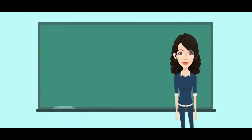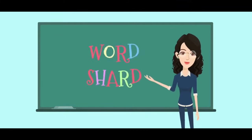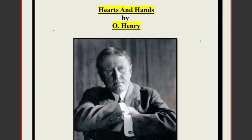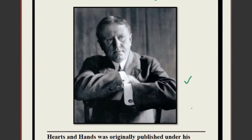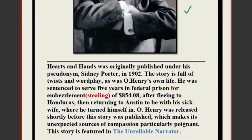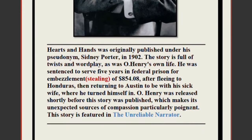Hello everybody, welcome to Word Shard. Today we are going to start with the chapter 'Hearts and Hands,' which is written by O. Henry. This is a picture of O. Henry, and this is a chapter for ICC students for class 9 and class 10. Before we start with the chapter, it is necessary that we know something about the author.